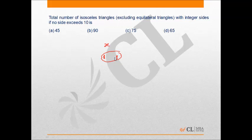If it is less than 2, it can be 1 only. In that case, the triangle will not only be isosceles, it will be equilateral as well. So both equal sides cannot be equal to 1.